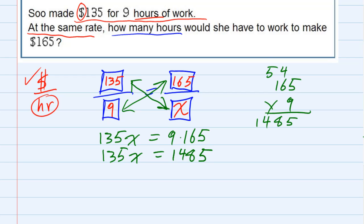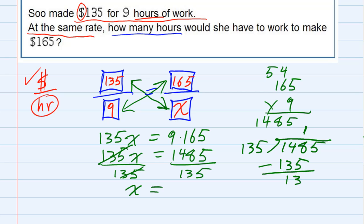And then to solve this for X, we just need to divide the 135 over to the other side. And that will give us the X by itself. So doing the division on the other side, 135 goes into 1485. 135 goes into the first part once, that gives me 135. And when I subtract it, I get 13, bring down the 5. And it looks like once more would be 135. It works out evenly, so 11.